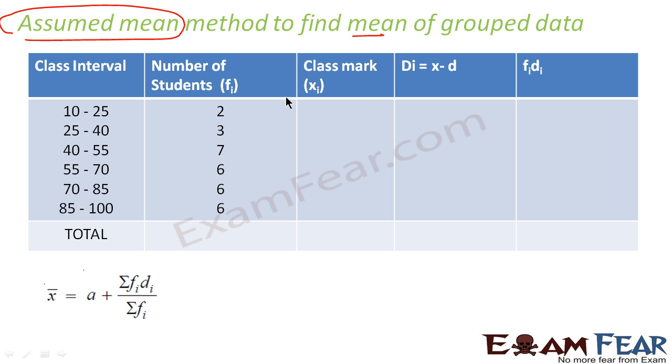In this case also, the first thing you have to do is find xi, and xi is nothing but you have to get the lower interval and the higher interval of the class, divide by 2.